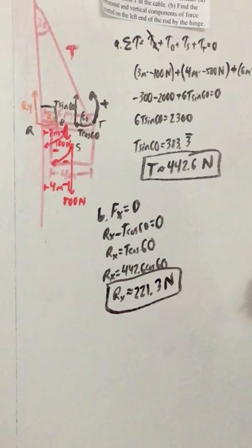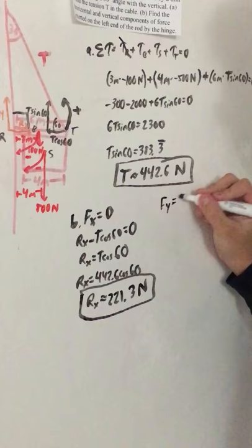So that is the horizontal component, and now we look at the vertical component. So now we do Fy equals zero.